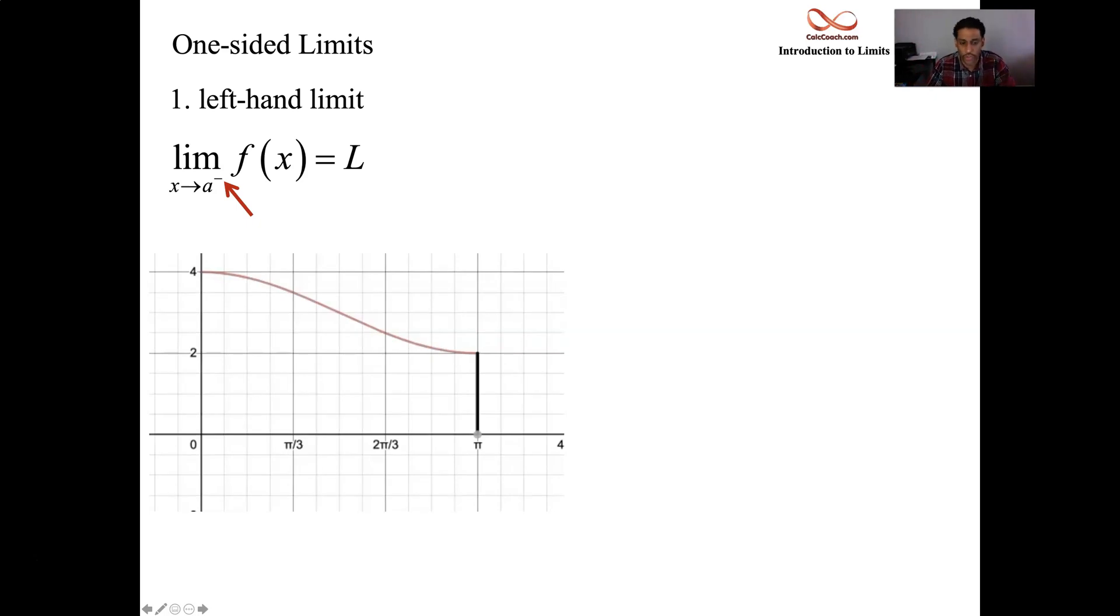The limit as x approaches 2 on that particular function from the left is – I'm sorry. The limit as x approaches pi from the left is 2 for this particular function. And so, yeah, this is the function cosine x looks like plus 3. From the left.